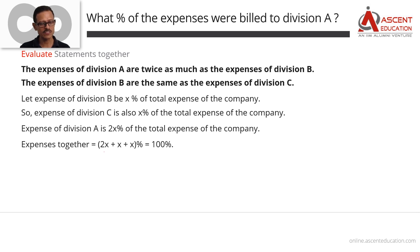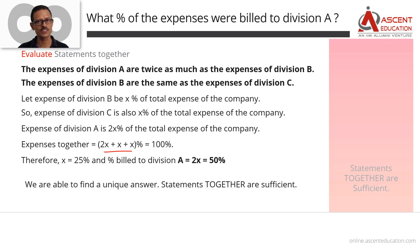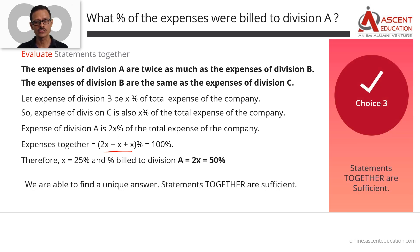The sum total of the expenses of the three divisions equals 100% of the expense of the company. We find that x equals 25%, and Division A contributes 2x, so A's expense is 50% of the company's total expense. Therefore, choice 3 is the correct answer.